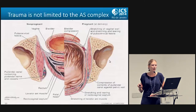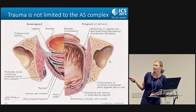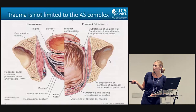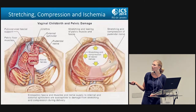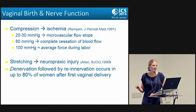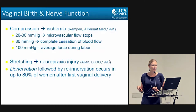This picture on the left is the normal non-pregnant female anatomy and on the right is what's happening during the parturition process. You can see that the bladder is compressed to a tiny area at the front, similarly the rectum is compressed to a tiny area at the back. There is stretching of the vaginal walls and tearing of the pubocervical fascia, and stretching and compression of the sacral nerves as well as all the blood flow to the muscles, connective tissue, and nerves of the pelvic floor. Compression leads to ischemia, and at 20–30 mmHg microvascular flow stops; at 80 mmHg there is complete cessation of blood flow. The average force during labor is 100 mmHg, so we are actually causing ischemia to the pelvic floor during vaginal birth.